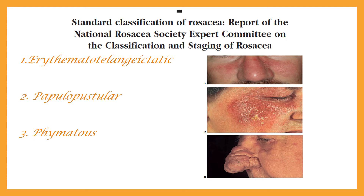The subtypes of rosacea include erythematotelangiectatic, papulopustular, phymatous — in which there is skin hypertrophy, usually seen in elderly males — and the fourth group is ocular rosacea, in which the eye is also involved.